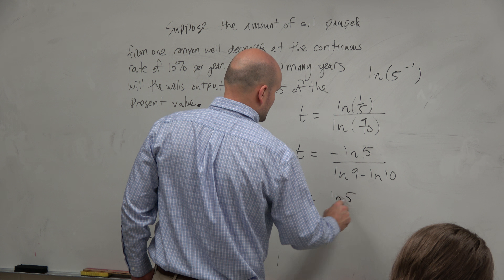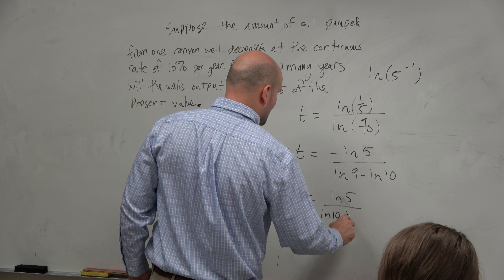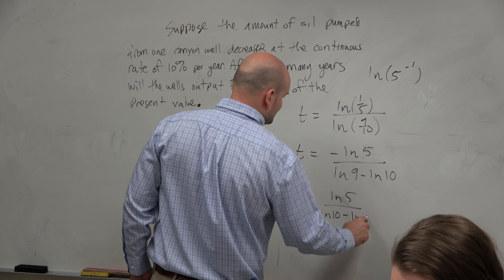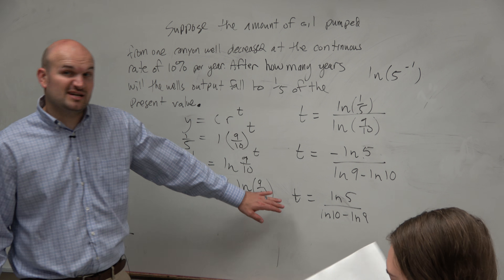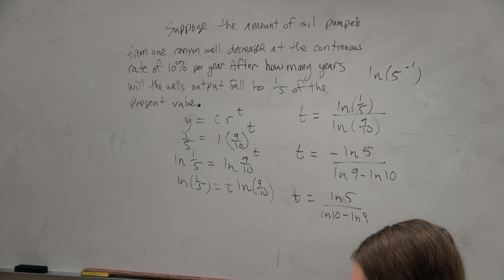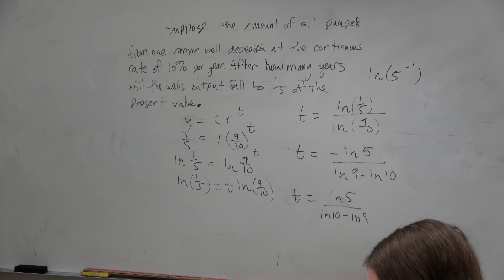All we need to do is find t. A student asks: why is it 9 over 10? Because that's the rate of growth. It's decreasing at 10%, and looking at the graph it makes sense — it decreases at a continuous rate of 10%, so subtracting that 10% from 100% gives a rate of 90%.